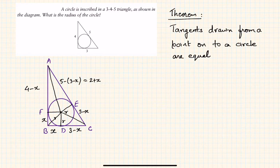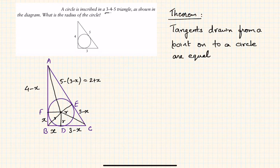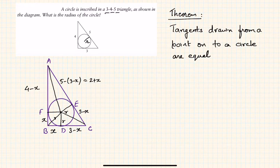Welcome to this question of the day problem. In this question, it's given that a circle is inscribed in a 3-4-5 triangle — that means the dimensions of the sides are 3, 4, and 5, as shown in the diagram. What is the radius of the circle? So we have to find out the radius of this inscribed circle within the triangle.